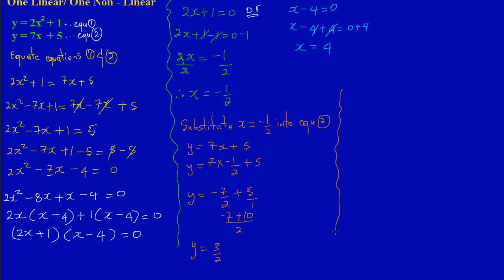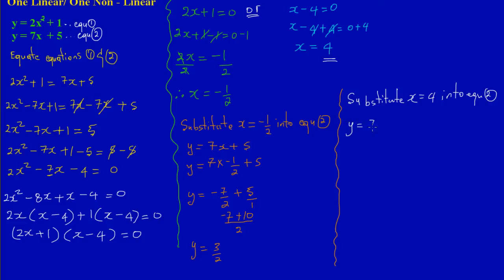Now I substitute x equals 4 into equation 2. Equation 2 states y equals 7x plus 5, so y equals 7 times 4 plus 5, which gives y equals 28 plus 5, therefore y equals 33.